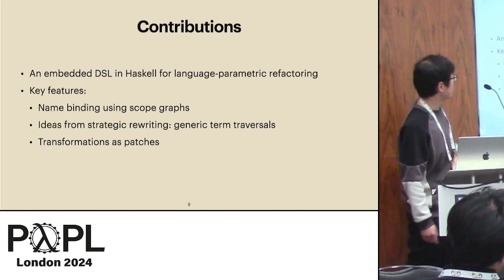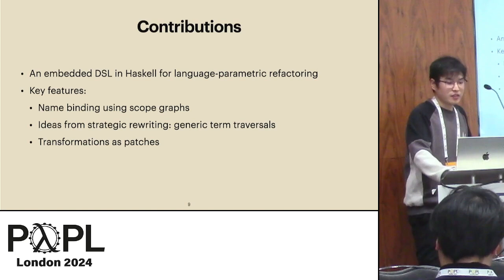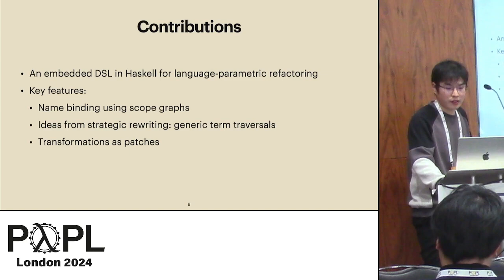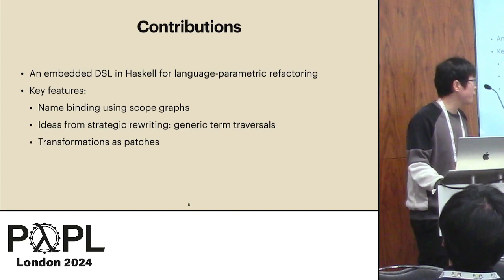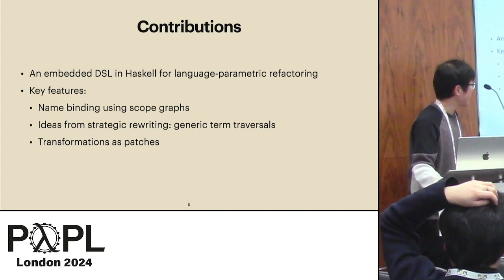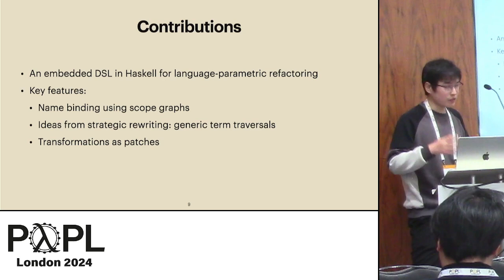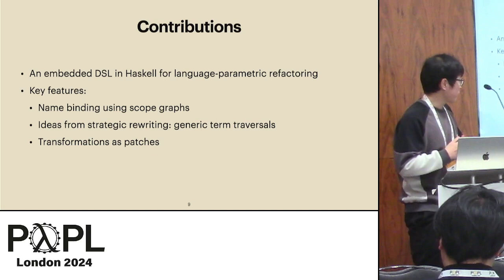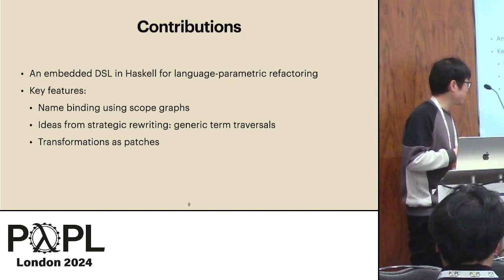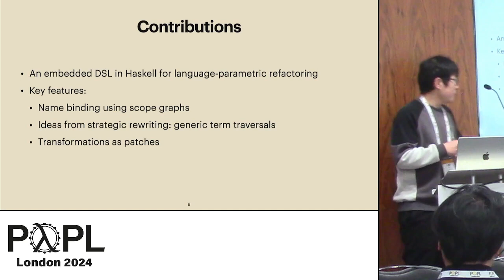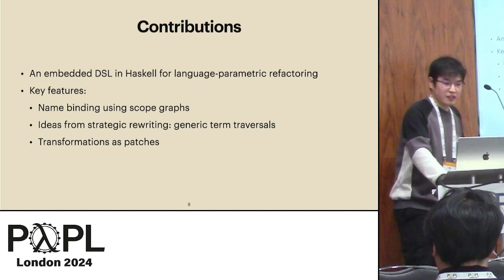Based on this question, we provide the following contributions. We present an embedded DSL in Haskell for language parametric refactoring with a couple of key features. First, name-binding using scope graphs — a language parametric framework for name resolution — providing integrated support for querying and updating name-binding information. Second, ideas from strategic rewriting, specifically generic term traversals, which allow traversals to be specified concisely. Third, transformations as patches, where a transformation can only change an AST node at most once.